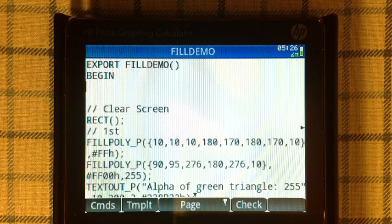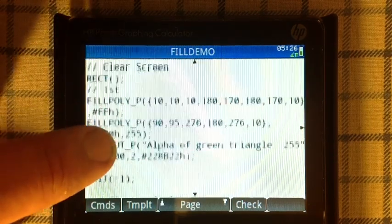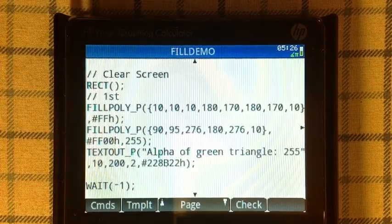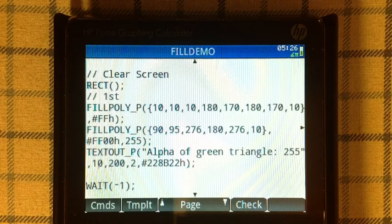So here is the first screen. Basically what we're going to do is use the FILLPOLY command to draw a square and a triangle on top of it.